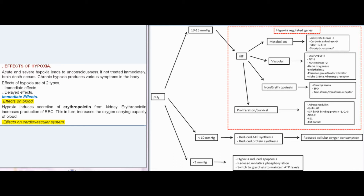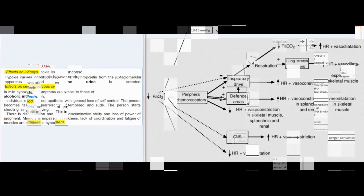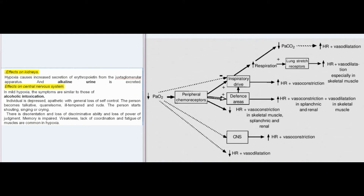Effects on the digestive system: hypoxia is associated with loss of appetite, nausea, and vomiting. The mouth becomes dry and there is a feeling of thirst. Effects on the kidneys: hypoxia causes increased secretion of erythropoietin from the juxtaglomerular apparatus, and alkaline urine is excreted.